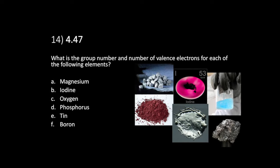In chapter 4, question 14, they're asking you what the group number is — that's the column number — and then the number of valence electrons for a bunch of different elements. Let's talk about what valence electrons are.